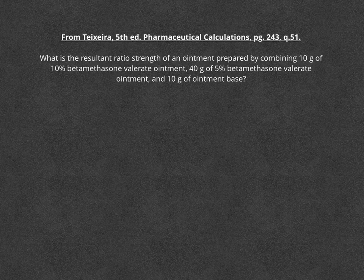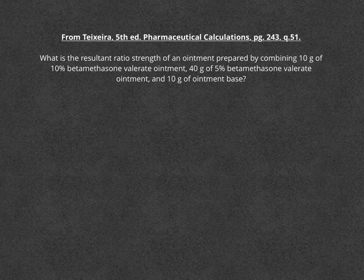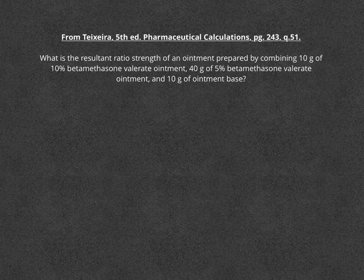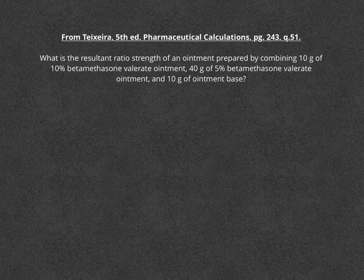In this example, the question asks for the resultant or final ratio strength of an ointment prepared by combining two different concentrations of betamethasone valerate ointment. We have 10 grams of 10% concentration, 40 grams of 5% betamethasone valerate ointment, and we're going to mix that in 10 grams of ointment base.